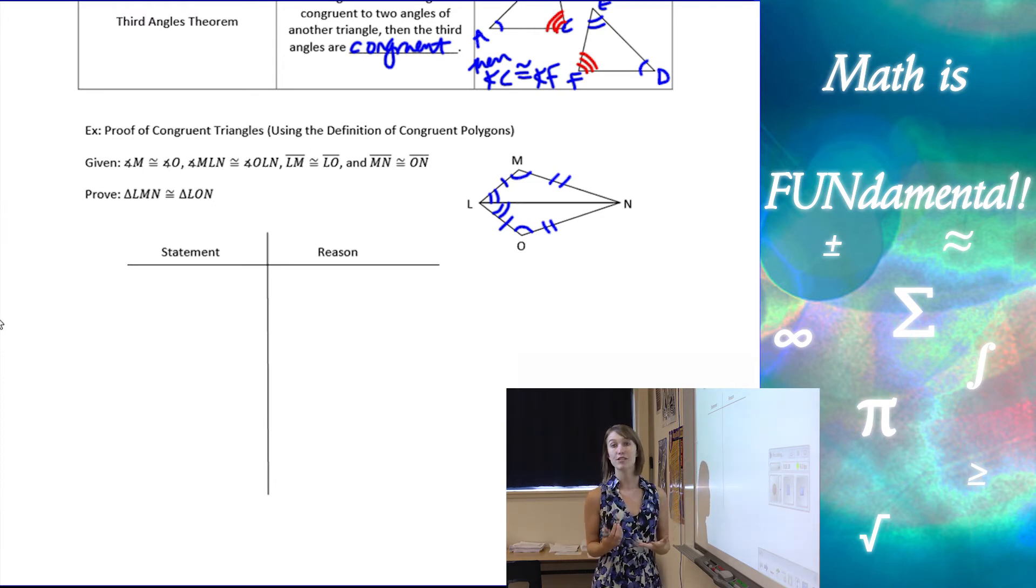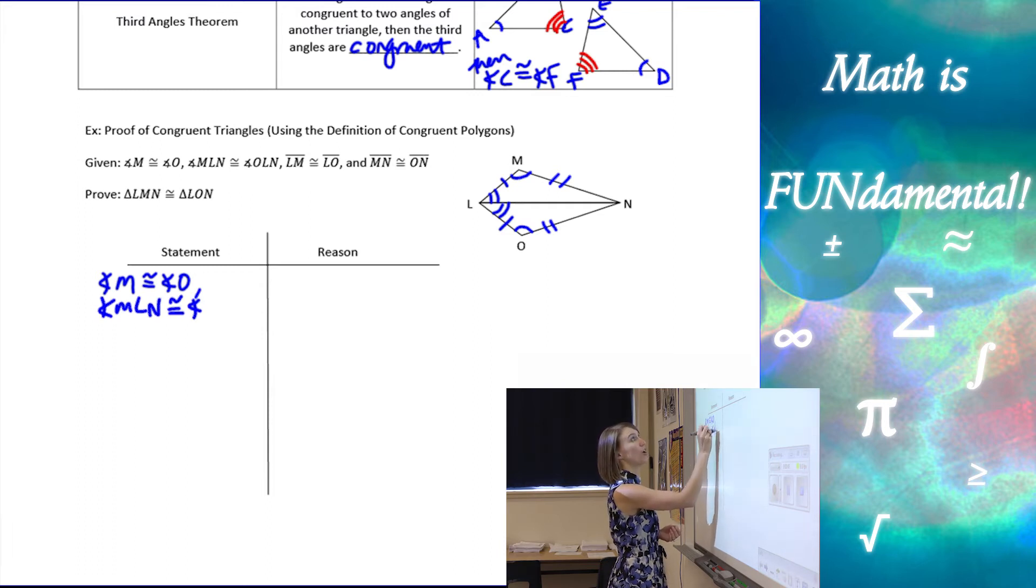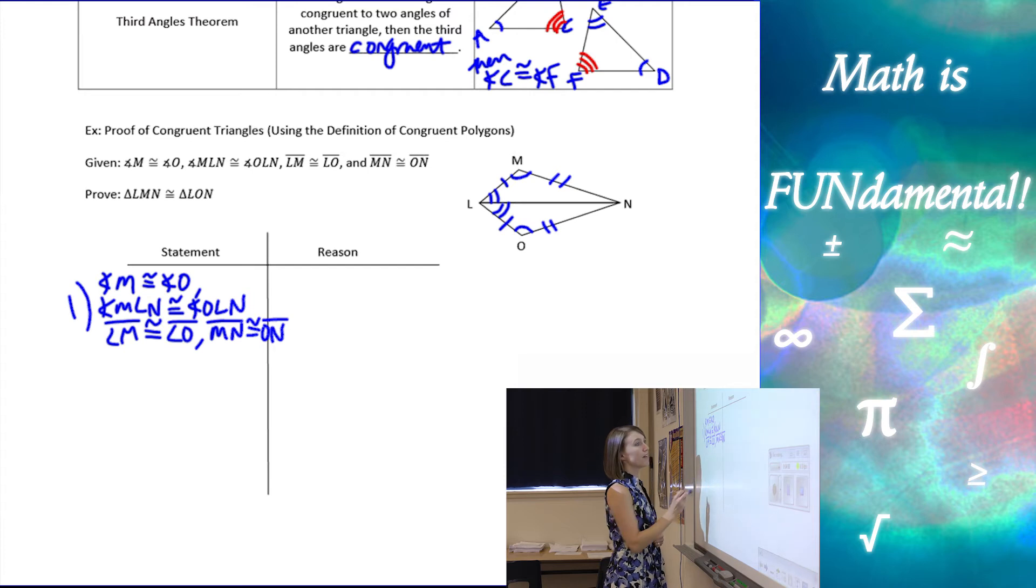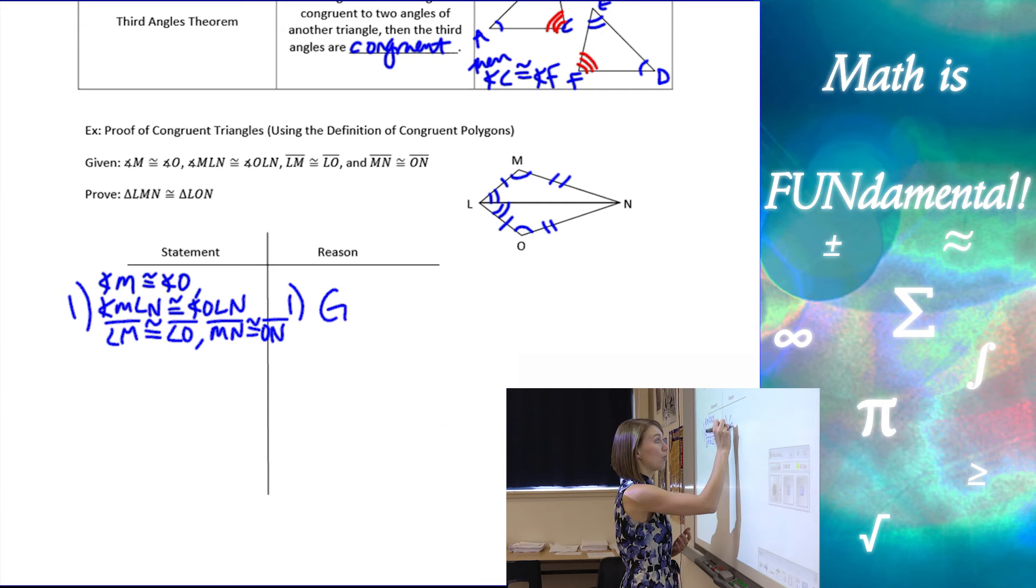The first statement is always the given information, so we want to write that in there. Angle M congruent to angle O, angle MLN congruent to angle OLN, segment LM congruent to segment LO, and lastly, MN is congruent to ON. All of that information we know is true because it's given, so we just write the word 'given' in our reason column.